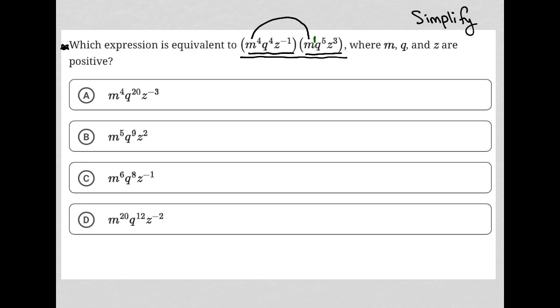And when I multiply m to the fourth power times m to the first power, I add those exponents together. So I should have m to the fifth power.